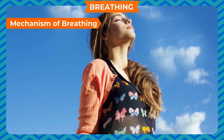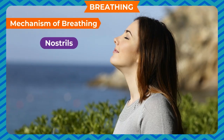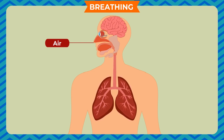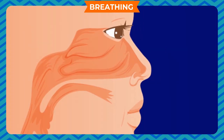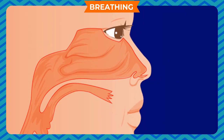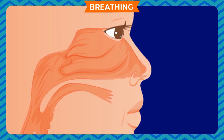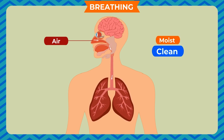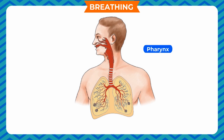Mechanism of breathing: In human beings, breathing begins with the nostrils, which is the gateway of air into our body. The air rich in oxygen is taken into the body through the nostrils. This air contains dust and other foreign particles. The inner lining of the nose constantly secretes mucus which traps these dust particles. The hair present in the inner lining also help in trapping the dust. In this process, air becomes warm, moist, and clean. It then reaches a small tube called the pharynx.